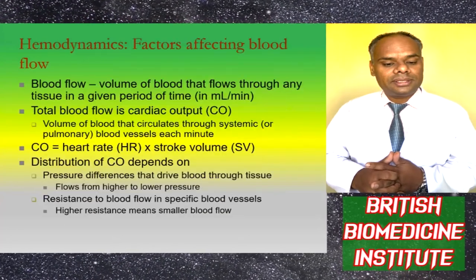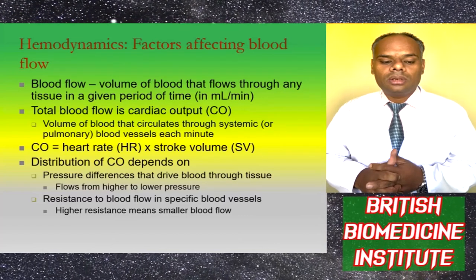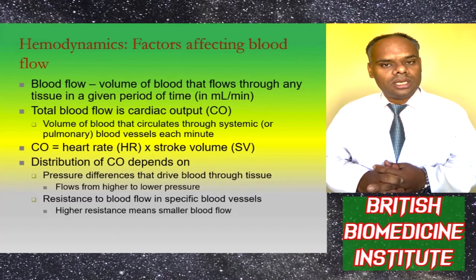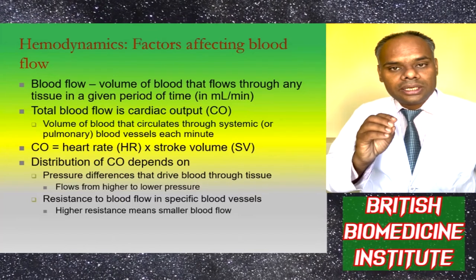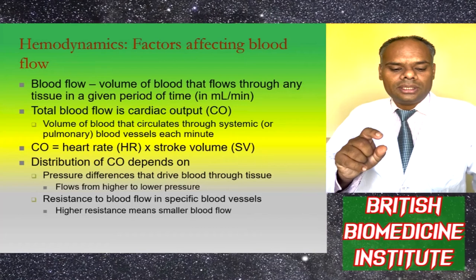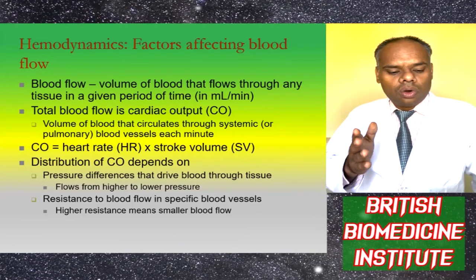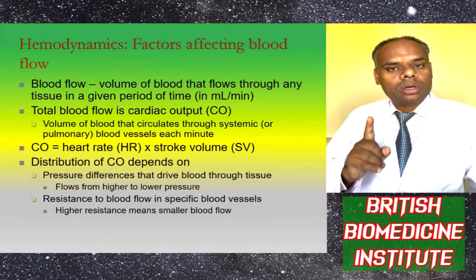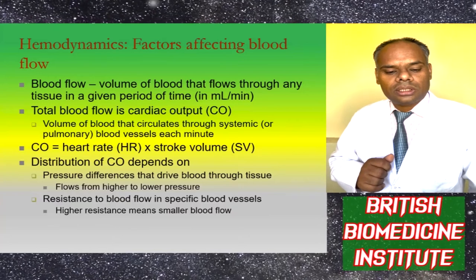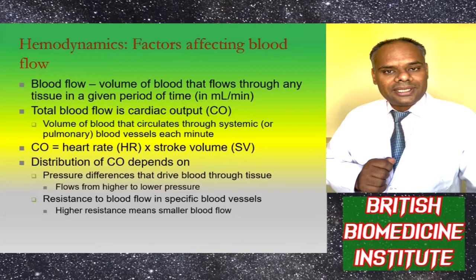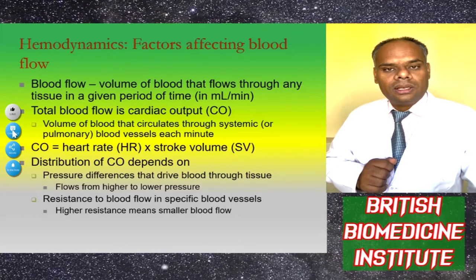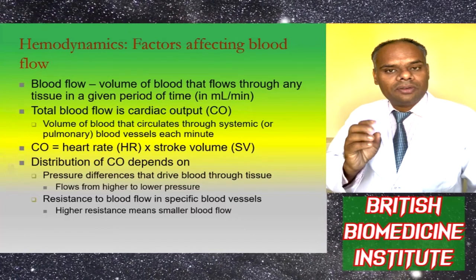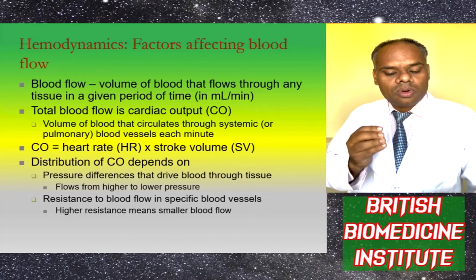Hemodynamics involves various factors affecting blood flow. Volume of blood flow is the volume of blood flowing through any tissue in a given period, measured in mL per minute. Total blood flow equals cardiac output (CO) — the volume of blood circulating through systemic or pulmonary vessels every minute — where cardiac output equals heart rate multiplied by stroke volume. Distribution of cardiac output depends on the pressure difference driving blood from higher to lower pressure and the resistance to blood flow in specific vessels; high resistance means less blood flow.